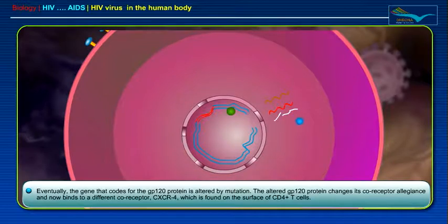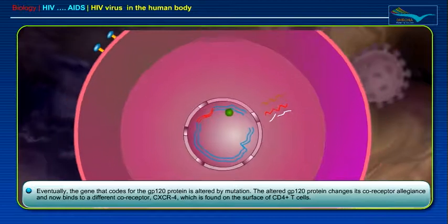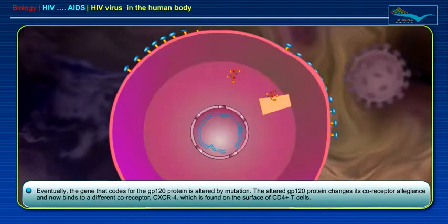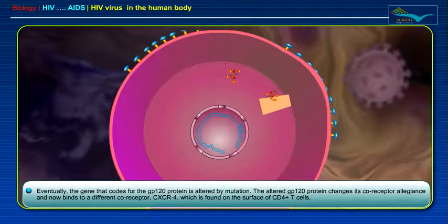Eventually, the gene that codes for the GP120 protein is altered by mutation. The altered GP120 protein changes its co-receptor allegiance and now binds to a different co-receptor, CXCR4, which is found on the surface of CD4-positive T-cells.